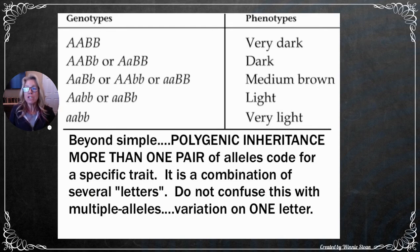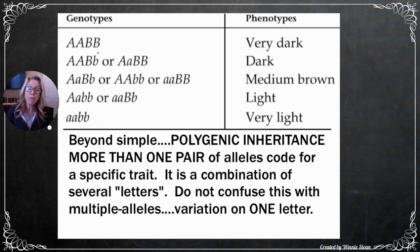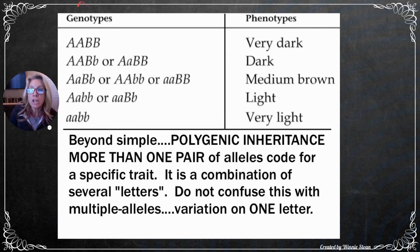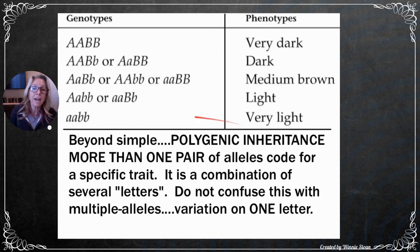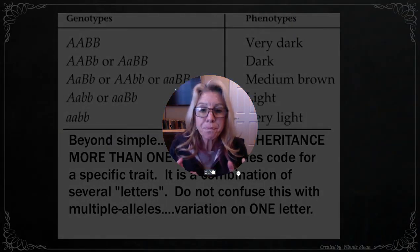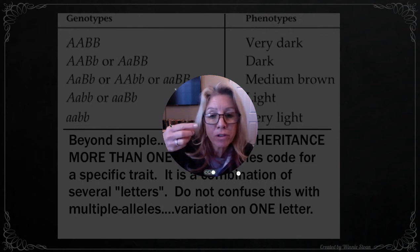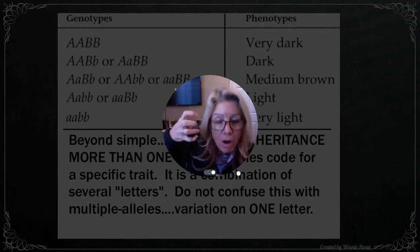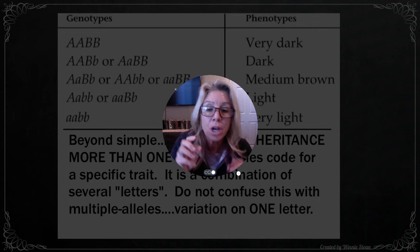Next topic: polygenic inheritance. 'Poly' means many, so instead of just one set of alleles determining a trait, a combination of gene sets contributes. An example is skin color — we're not just black or white, there's a bell-shaped curve of variation. Homozygous dominant at all loci (A^A B^B) gives very dark skin; homozygous recessive (aa bb) gives very light. Polygenic inheritance is distinct from multiple alleles: multiple alleles are all alternative forms of the same gene, while polygenic involves different genes (e.g., A's and B's) contributing to one trait.